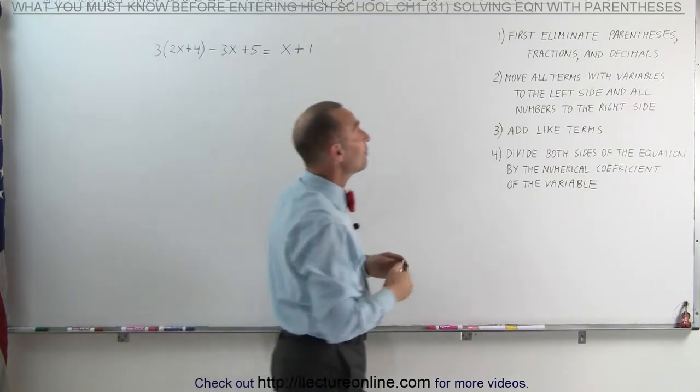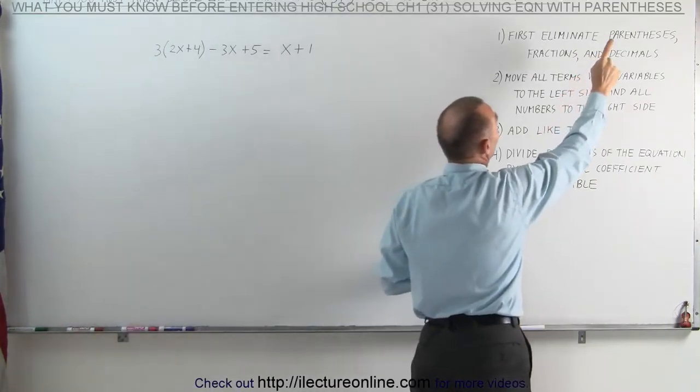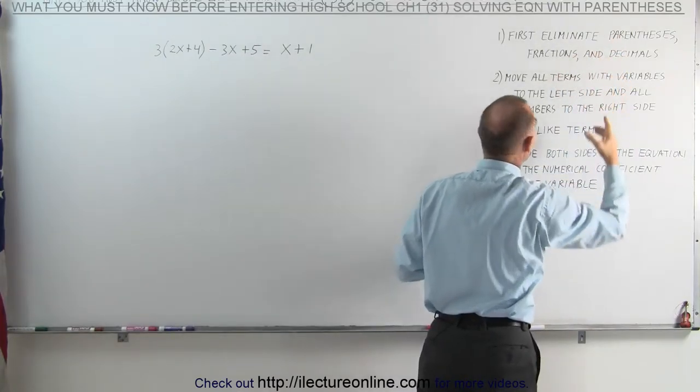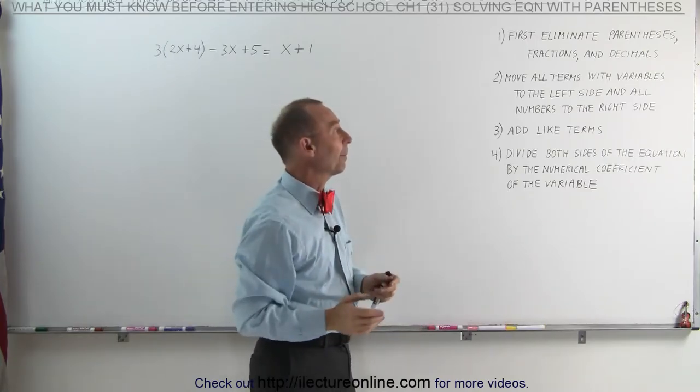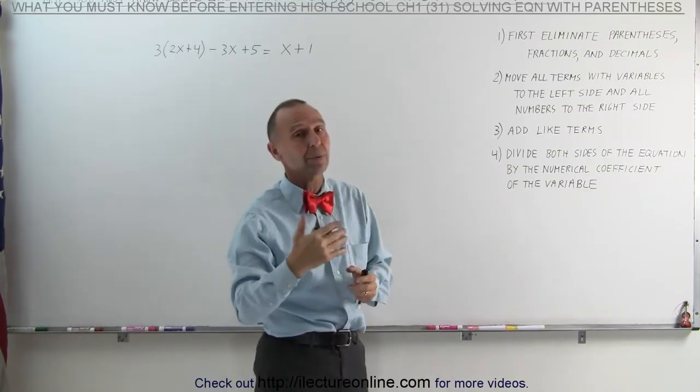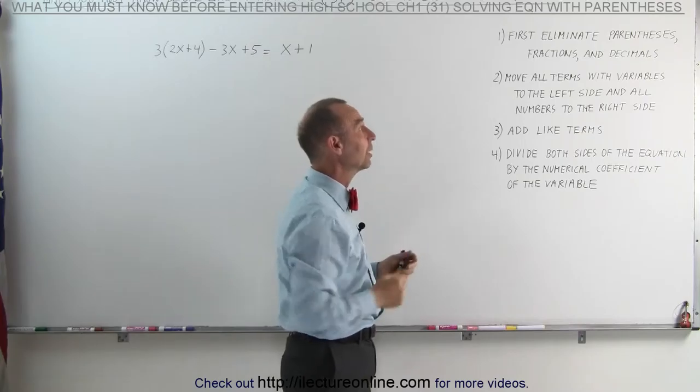The way we approach that is in a systematic fashion. First, we find if there are parentheses, fractions, or decimals inside our equation, then we should eliminate those first. That's the first step. So eliminate if there are any parentheses, fractions, or decimals, eliminate those first.